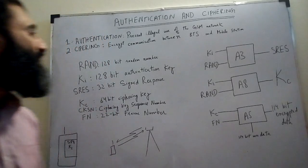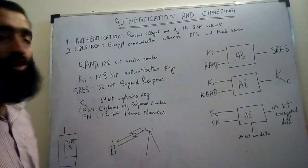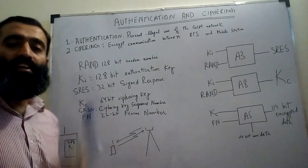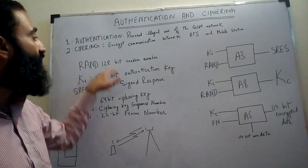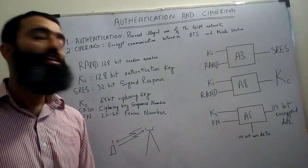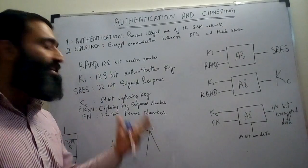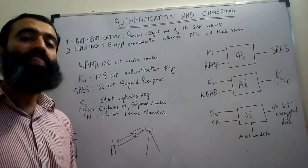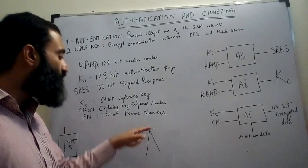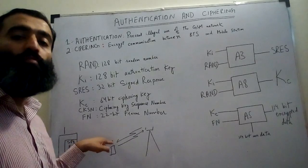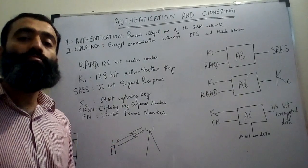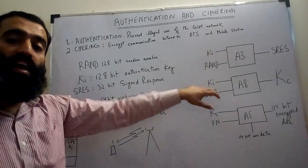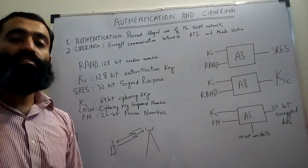First of all, an important parameter is RAND, or the random number. It is a 128-bit random number which is generated by the network, and it is sent over the air interface to the mobile station to be used in authentication as well as in ciphering.